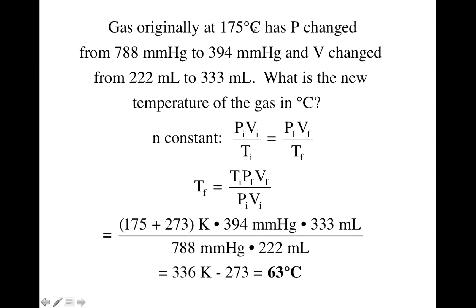Let's start with a gas sample originally at 175 degrees C, and it has a pressure change from 788 millimeters of mercury to 394 millimeters of mercury, and the volumes change from 222 milliliters to 333 milliliters, and they want to know what will be the new temperature of the gas in degrees C. Now you notice they didn't mention moles at all, so you can assume the moles are constant.